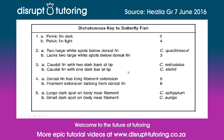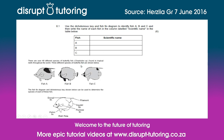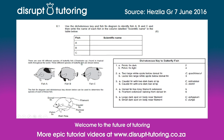Let's look at question 8.1, which asks us to use the dichotomous key and fish fin diagram to identify Fish A, B, and C, and then write the name of each fish in the column labeled 'scientific name' in the table below. This is the table where we have to write the scientific name of each fish. Let's remind ourselves of what we're looking at — the fish fin diagram, three different fish, and the key we can use to classify them.